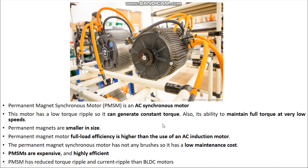Key features of PMSM: it's an AC synchronous motor that can generate constant torque and maintain full torque at very low speed. It's smaller in size and doesn't require a large mounting area. Full-load efficiency is higher than an AC induction motor — even at full payload of, say, 300 kg, you still achieve high efficiency. In an induction motor, efficiency drops as you increase load. PMSM motors have low maintenance cost, but are expensive — highly efficient but expensive.